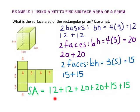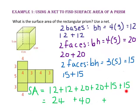12 plus 12 is 24. 20 plus 20 is 40. 15 plus 15 is 30, which gives us a surface area of 94 centimeters squared.